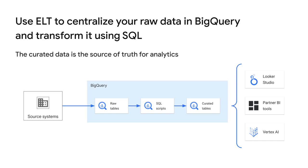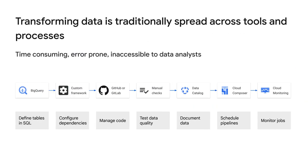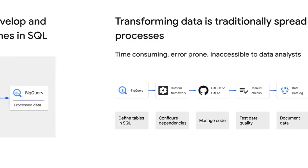This single source of truth layer has the level of quality, completeness, and freshness needed so that analytical applications, reporting dashboards, and visualization tools can use it to derive insights and make important business decisions. The big challenge is that transforming data is spread across tools and processes, with some steps being more manual than preferred. It's not easy to reuse SQL statements across different scripts, and there's no way to write tests to ensure data consistency. Dependency management requires external software solutions.